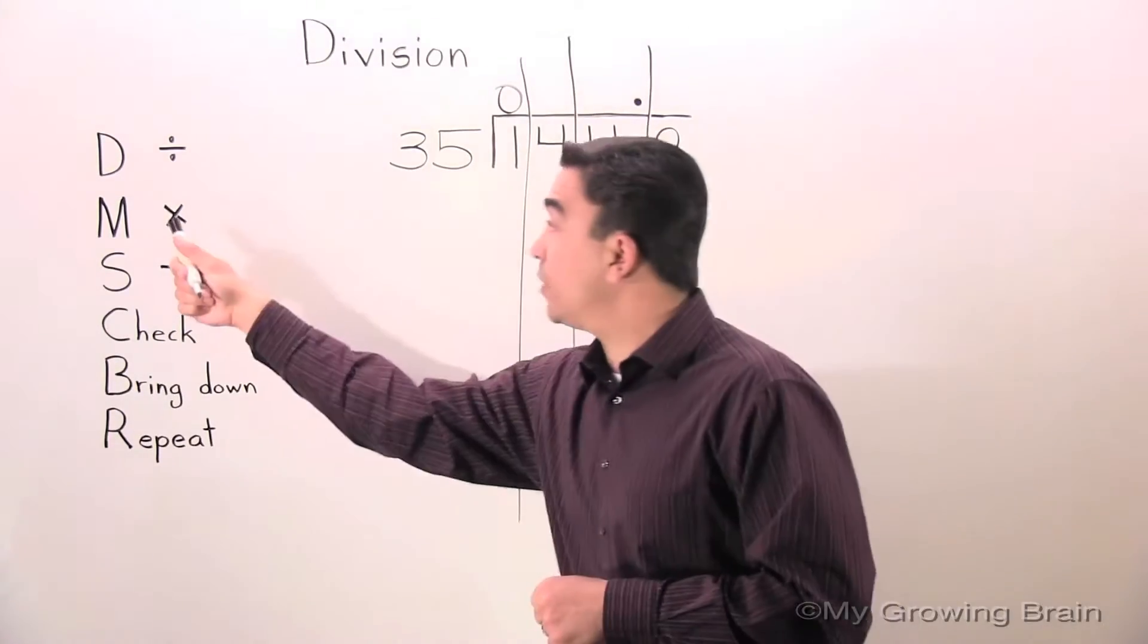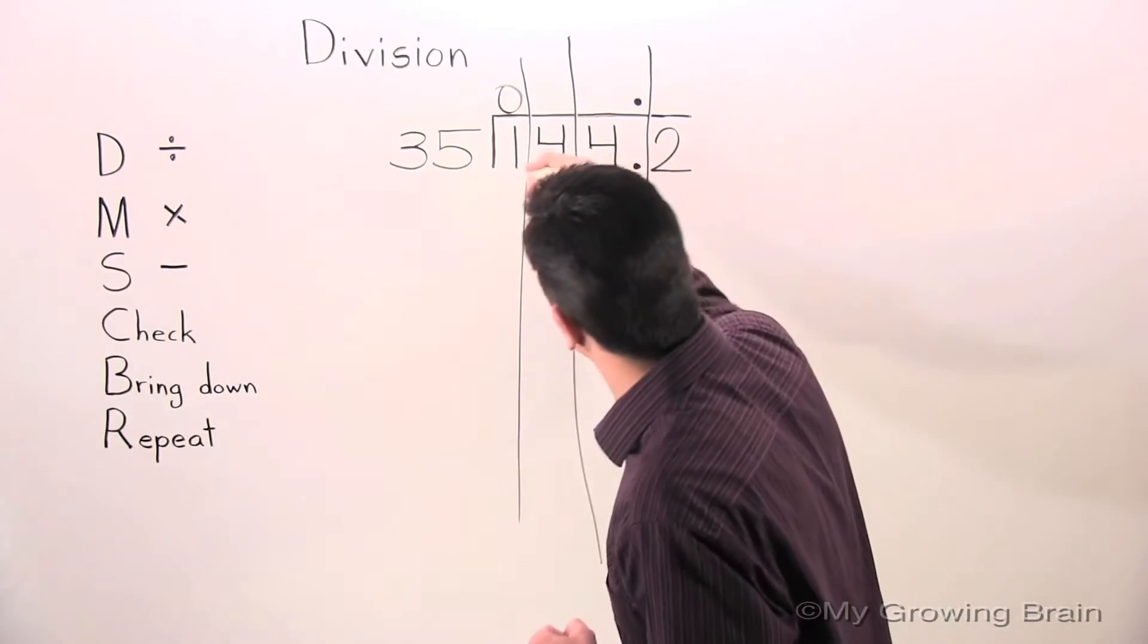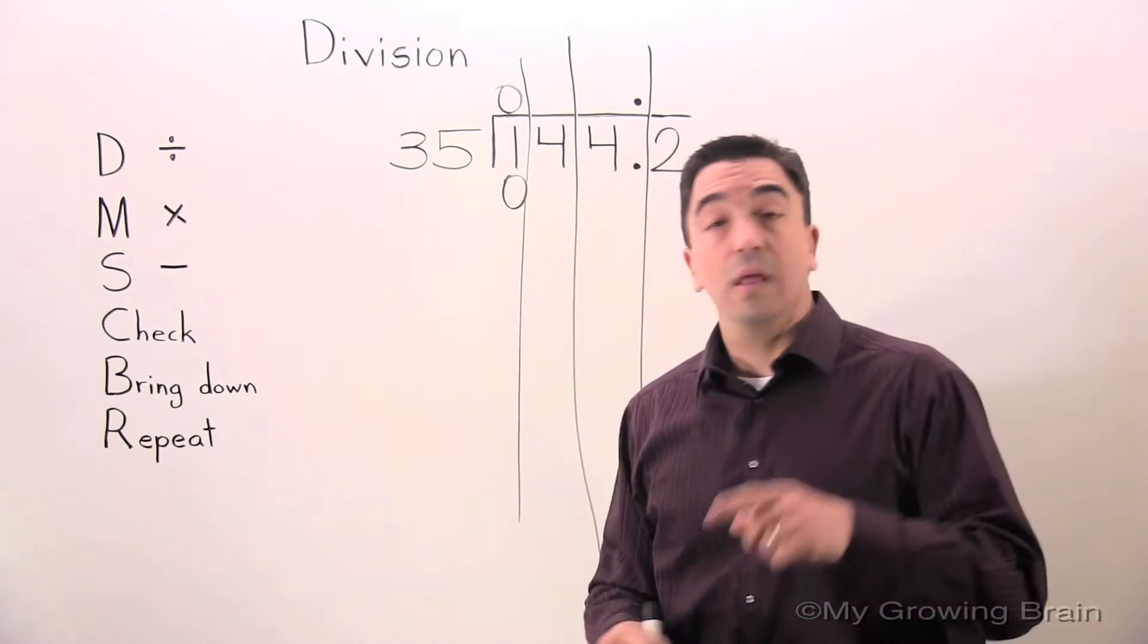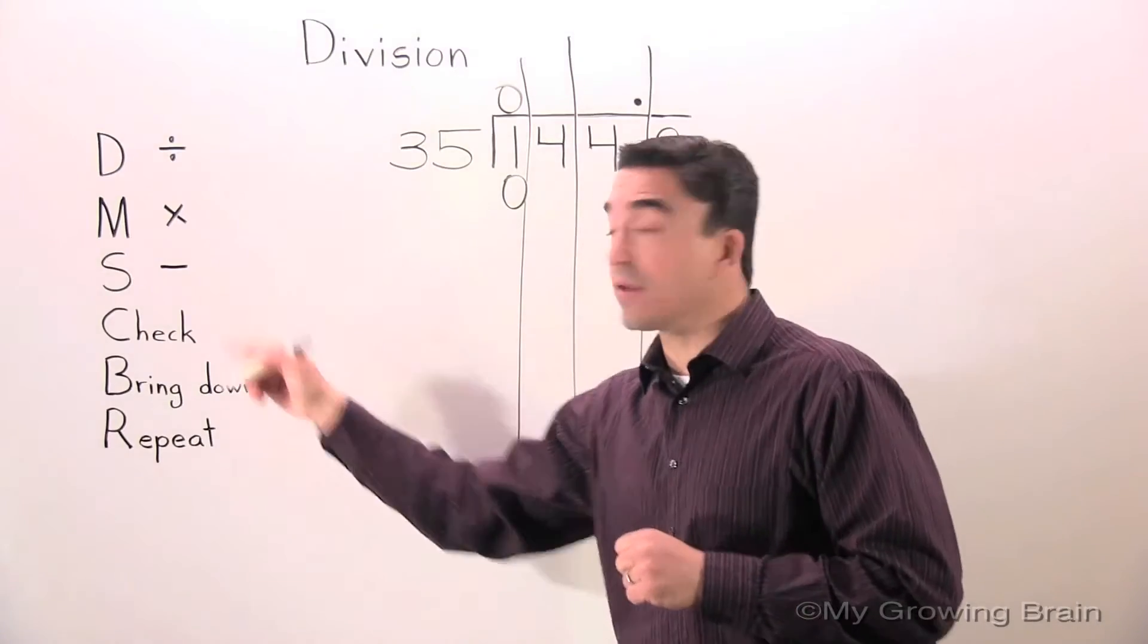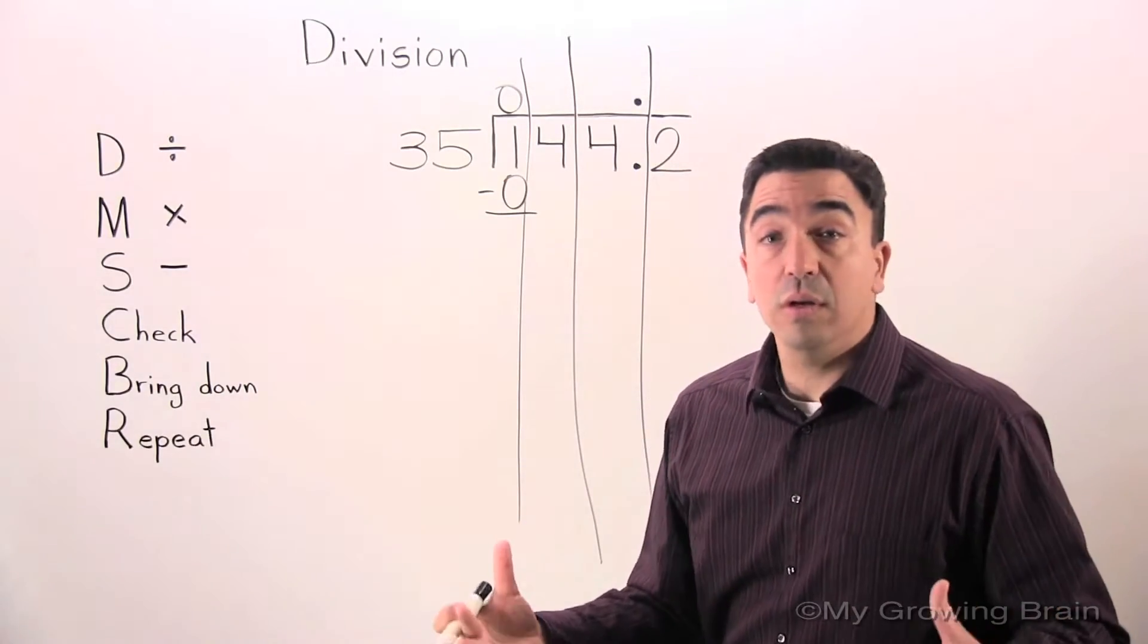Next step: multiply. 35 times 0 is 0. Next step: subtract. 1 minus 0 is 1.